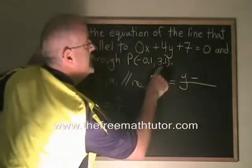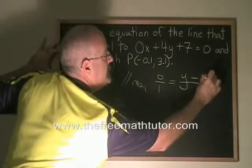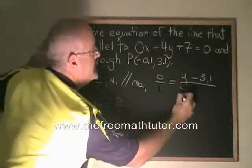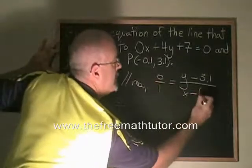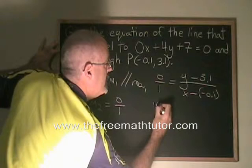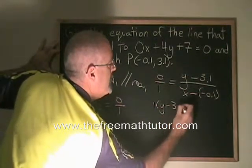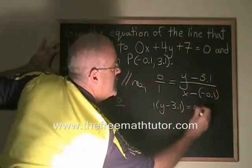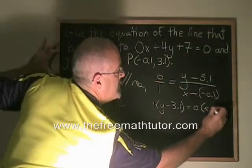I get y minus 3.1 over x minus negative 0.1. Cross-multiplying, I get 1 times y minus 3.1 is equal to 0 times x plus 0.1.